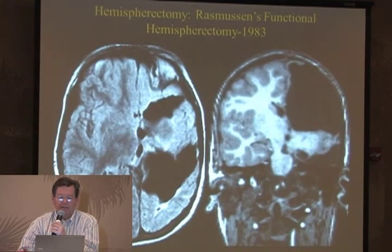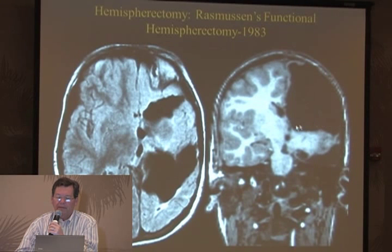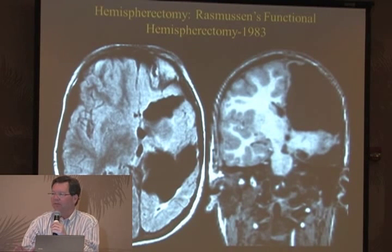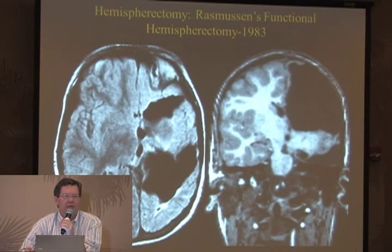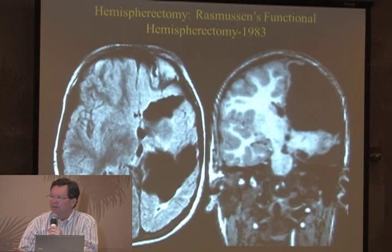By MRI, the functional hemispherectomy looks something like this: there's some tissue still left in the front, some tissue still left in the back, with a big chunk taken out from the temporal lobe and the insular still left behind. Everything else since then that uses the term functional hemispherectomy or hemispherotomy is a variation on this concept: take out parts, disconnect the rest.